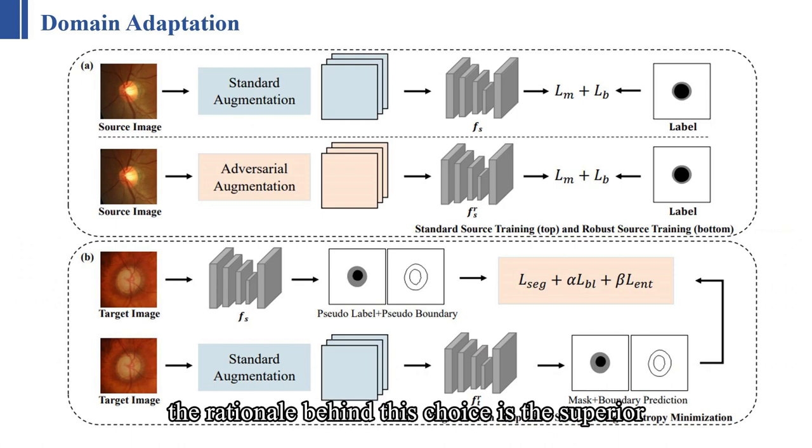The rationale behind this choice is the superior accuracy of the standard source model in generating pseudo-labels compared to the robust source model. We then augment the target image using standard techniques, again rotation and cropping. This image serves as the input to initialize the robust target model, FRT,